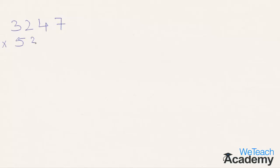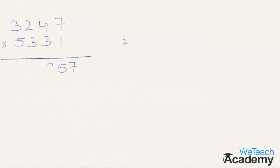Now let's proceed with the next example: multiply 3247 with 5331. In the first step, 1 into 7 is 7. In the second step, 4 into 1 plus 7 into 3 gives 4 plus 21, which is 25. So 5 is taken to the result and 2 is carried forward. In the third step, 7 into 3 is 21, plus 2 into 1 is 2, giving 23; plus 4 into 3 is 12, giving 35. Then 35 plus the carried 2 gives 37. So 7 is taken to the final answer and 3 is carried to the next step.